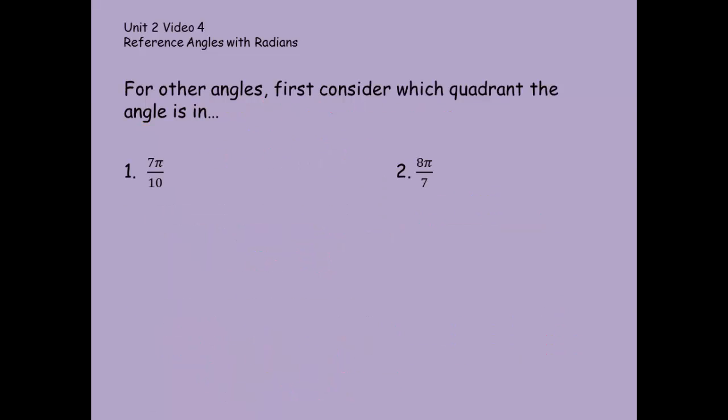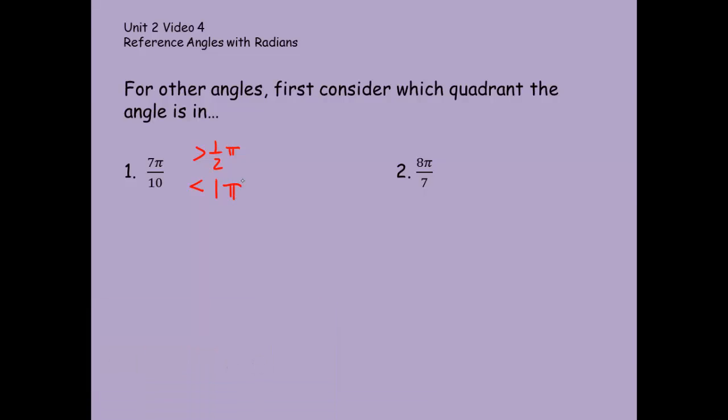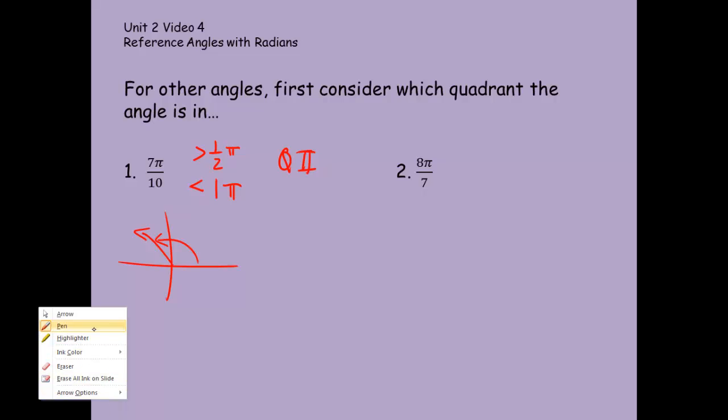For other angles, first consider which quadrant the angle's in. So 7/10 π. I'm going to imagine that 7/10 here is greater than a half but less than a whole. That means this angle, if it's greater than a half and less than a whole, is in quadrant 2. So in quadrant 2, I've got the angle 7/10 π. My reference angle, this is very similar to when we did it with degrees, is 3/10 π.